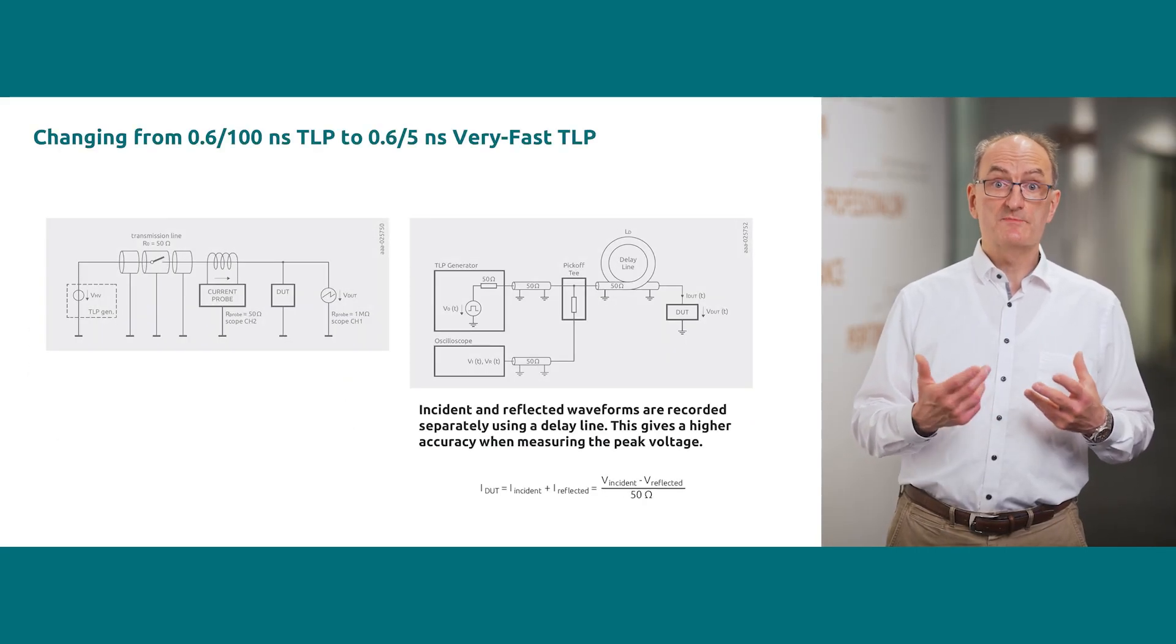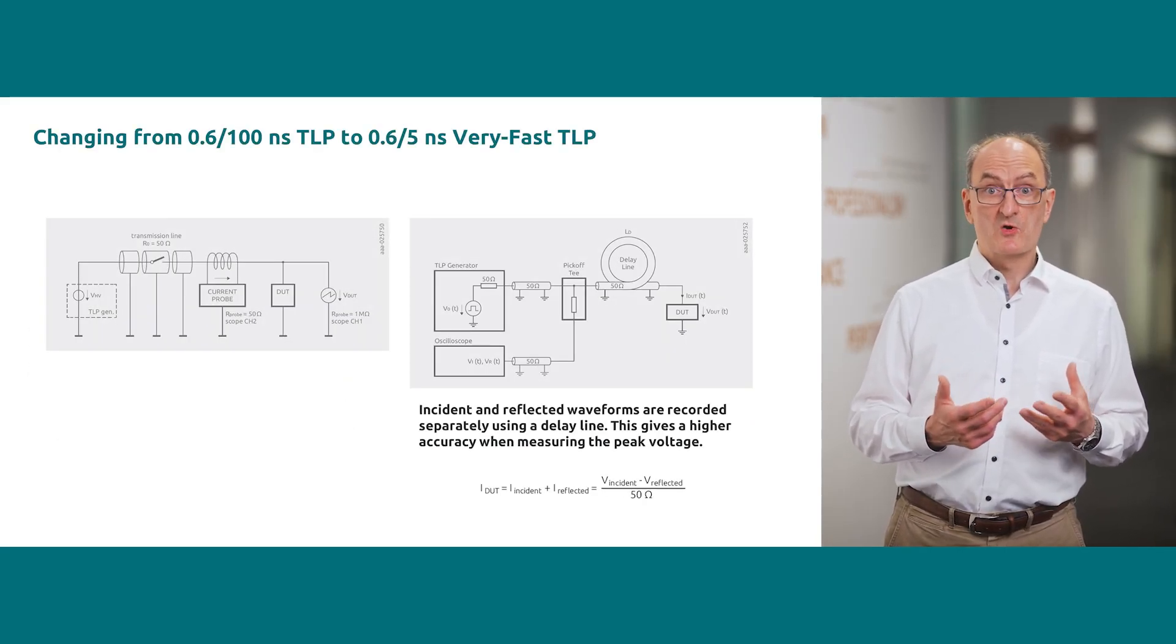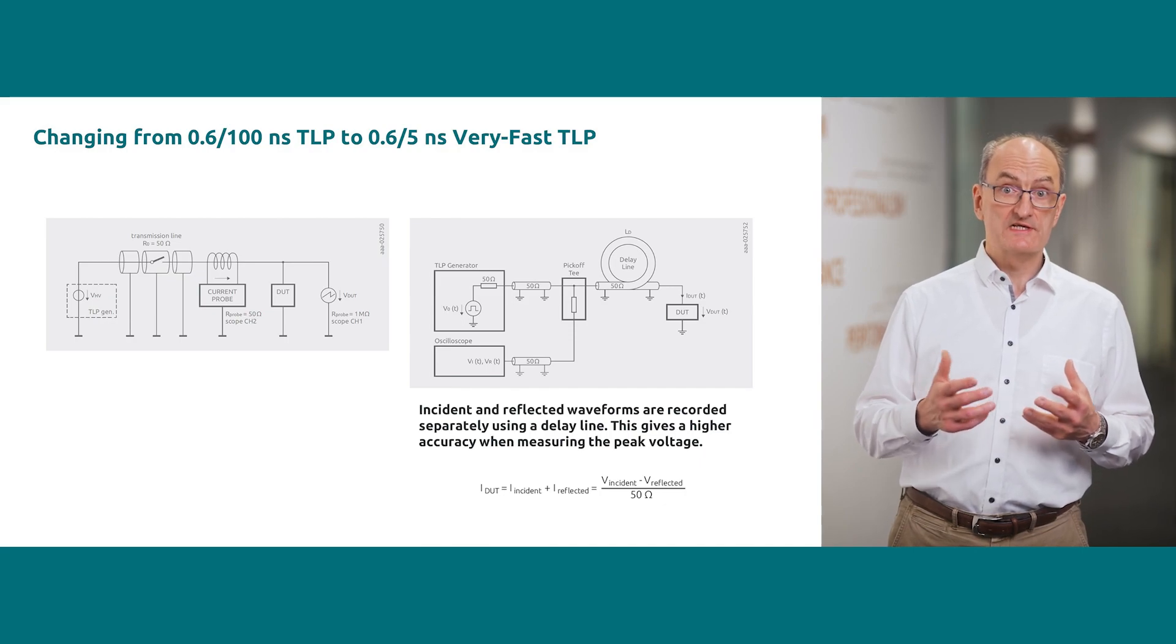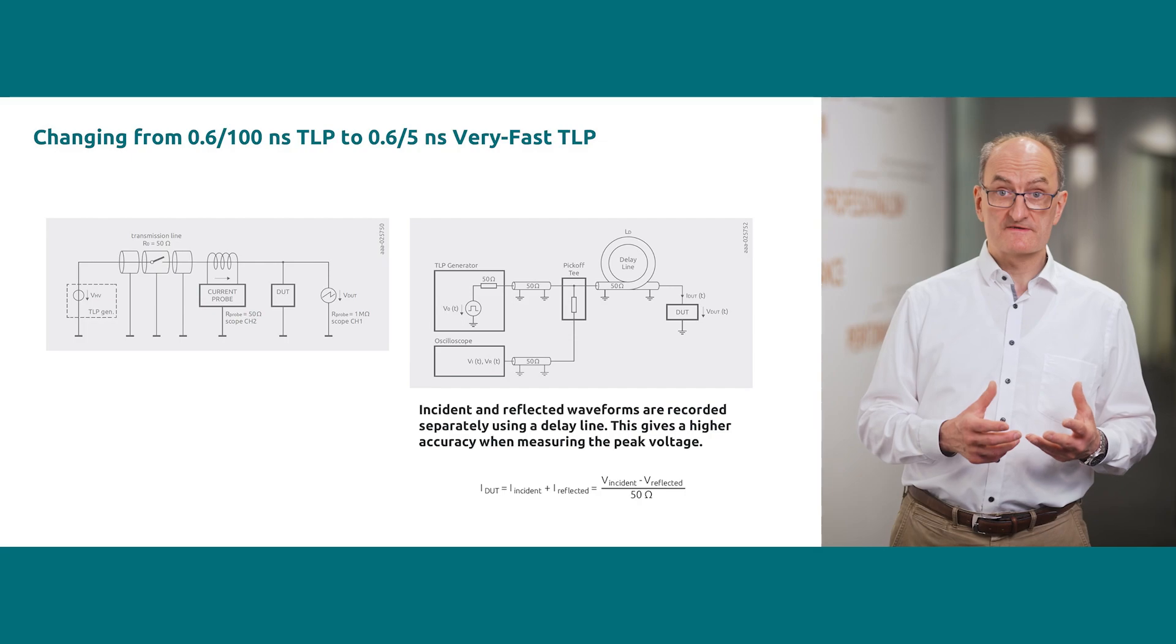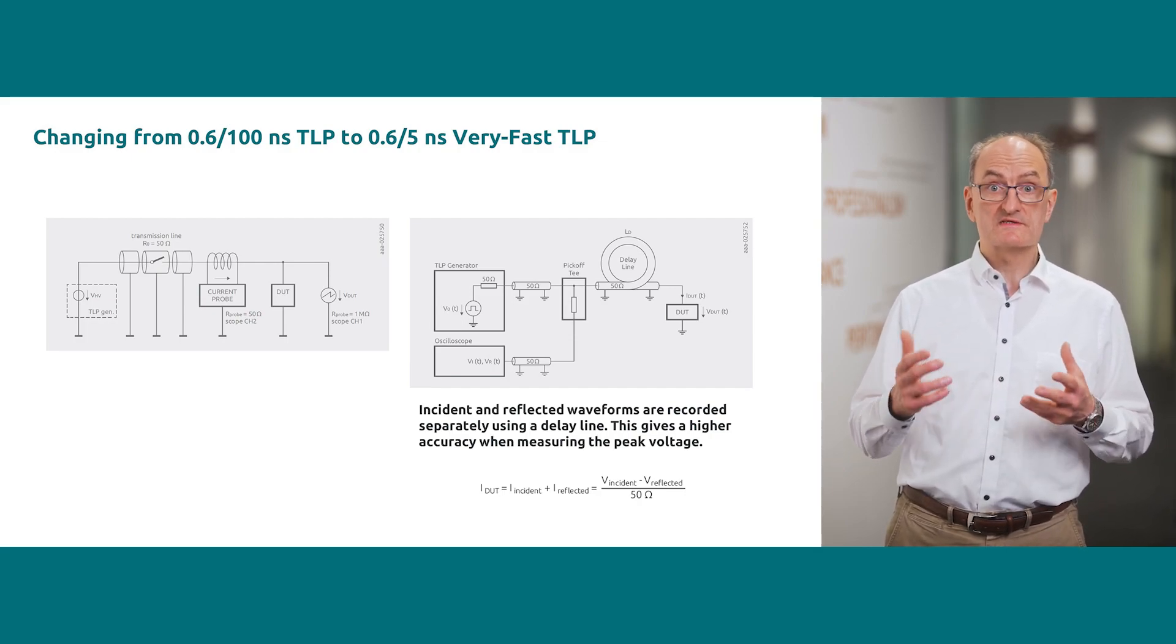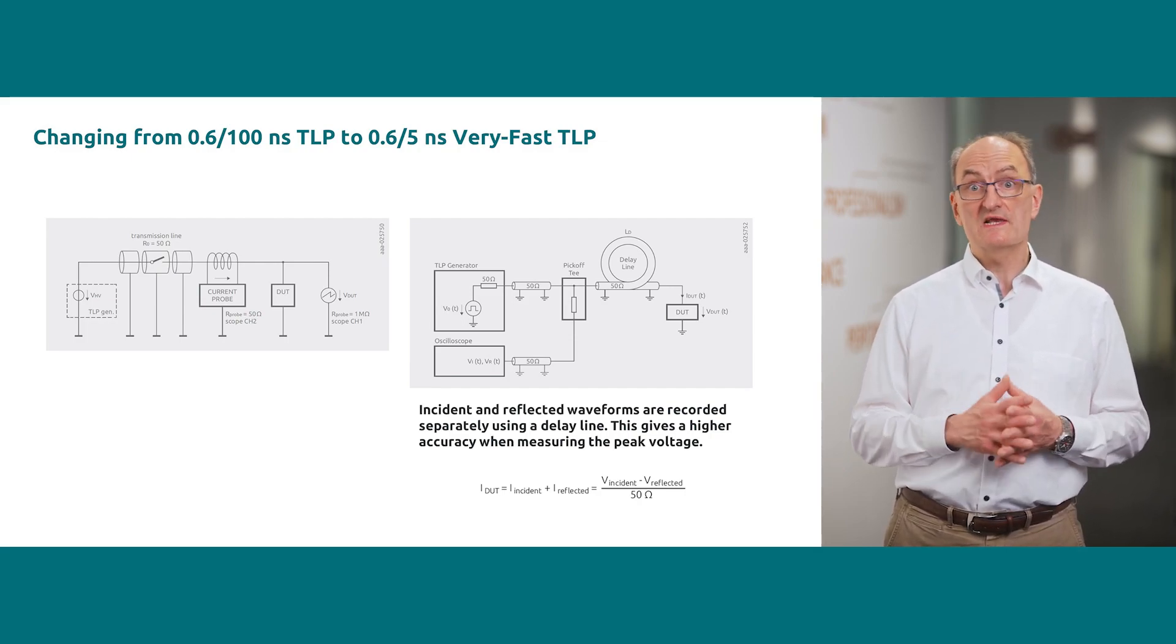To get a more precise peak voltage measurement, we switch to very fast TLP measurements. For very fast TLP measurements, incident and reflective pulse are recorded separately by using a delay line.